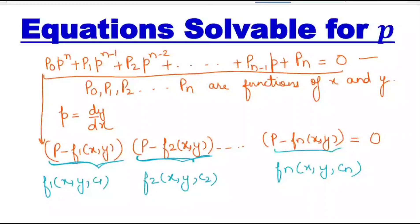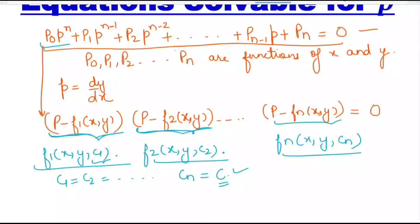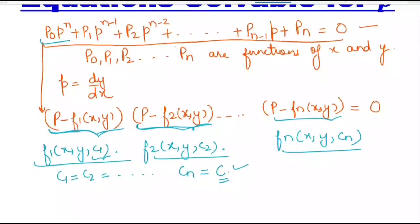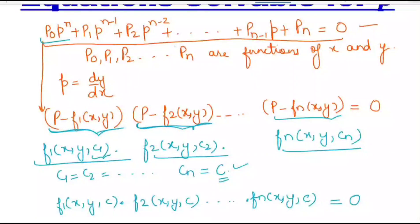Since the given equation is first order, the general solution will have one arbitrary constant. All constants c₁, c₂, c₃... are taken as a single arbitrary constant c. When we multiply all the factor solutions together, we get the complete solution of the given differential equation. That means the required solution is f₁(x,y,c) × f₂(x,y,c) × ... × fₙ(x,y,c) = 0.